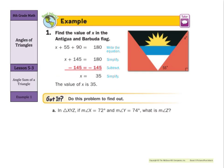In our example, we find the value of x in the Antigua and Barbados flag. The three angles add up to 180 degrees, and we have 55 and 90, so x plus 55 plus 90 equals 180. Simplifying: 55 plus 90 equals 145, then subtracting 145 from both sides gives x equals 35 degrees.